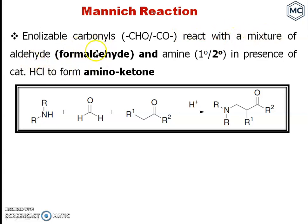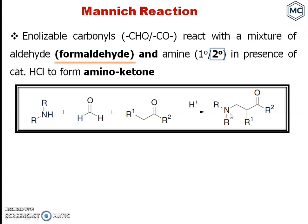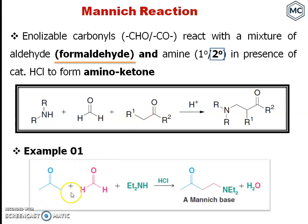Preferably formaldehyde and an amine — primary or secondary amine, secondary is better — in the presence of a catalytic amount of hydrogen chloride, to form an amino ketone. This is the general reaction. Coming to a specific example: acetone reacts with formaldehyde and diethylamine to give a beta-amino ketone. This is called the Mannich base.